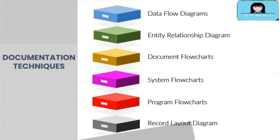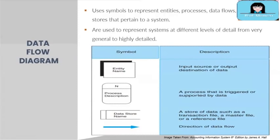In this video we will discuss six common documentation techniques: data flow diagrams, entity relationship diagrams, document flowcharts, system flowcharts, program flowcharts, and record layout diagrams. We will start with the data flow diagram. A DFD or data flow diagram uses symbols to represent entities, processes, data flows, and data storage pertaining to a system. They are used to represent systems at different levels of detail, from very general to highly detailed. On your screen you will see a diagram illustrating the symbols used for DFDs — familiarize yourself with the symbols.